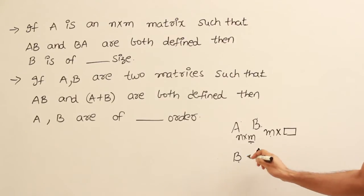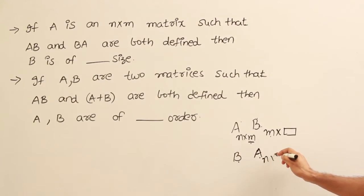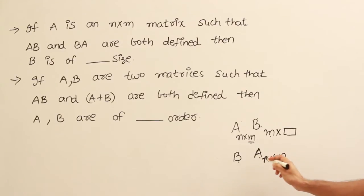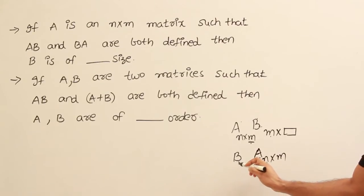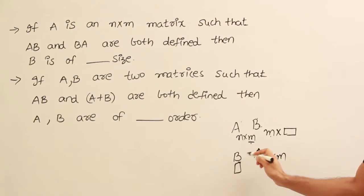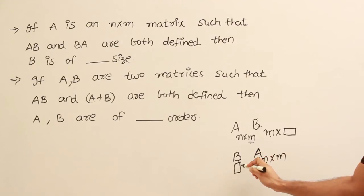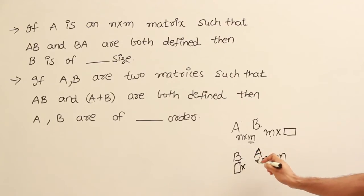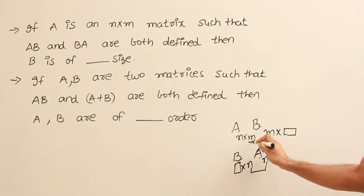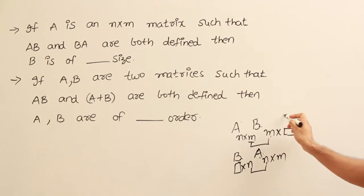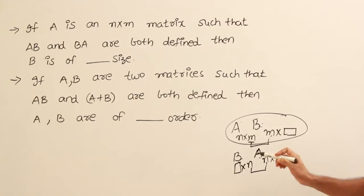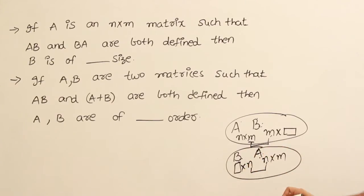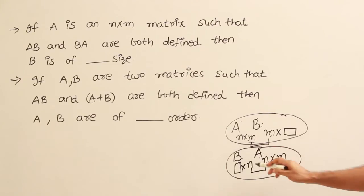Next, BA is also possible, and A is an n by m matrix. For this multiplication to be possible, the number of columns in the first matrix B should be equal to the number of rows in the second matrix A. So from the fact that BA is possible, I can determine that the number of columns in B is going to be n.